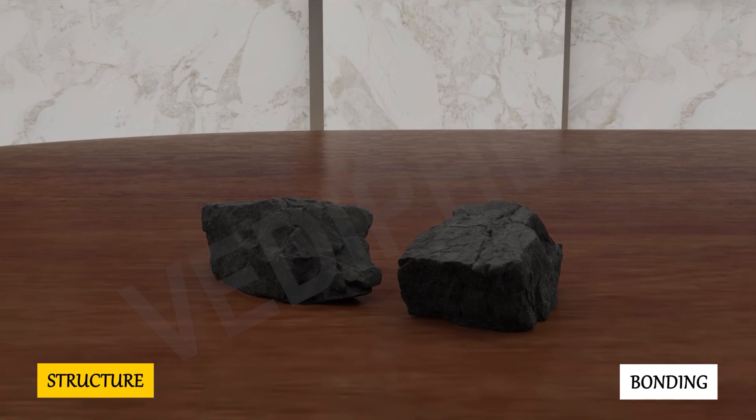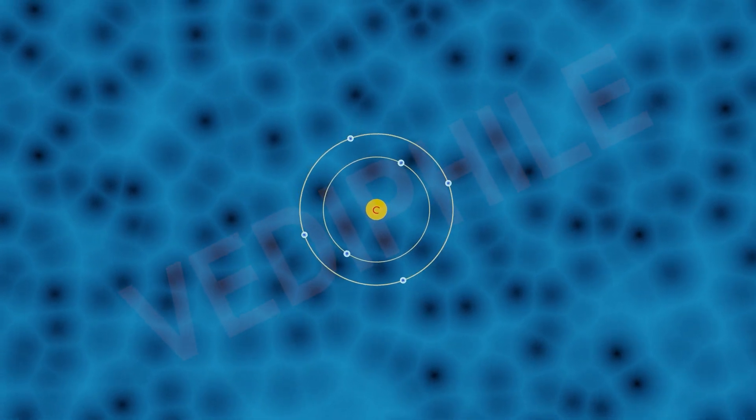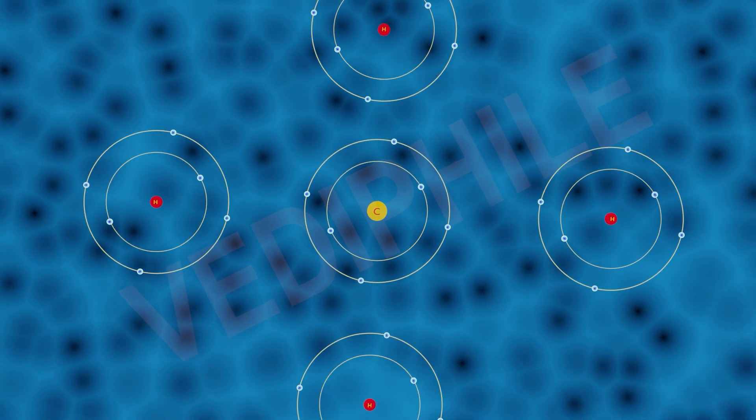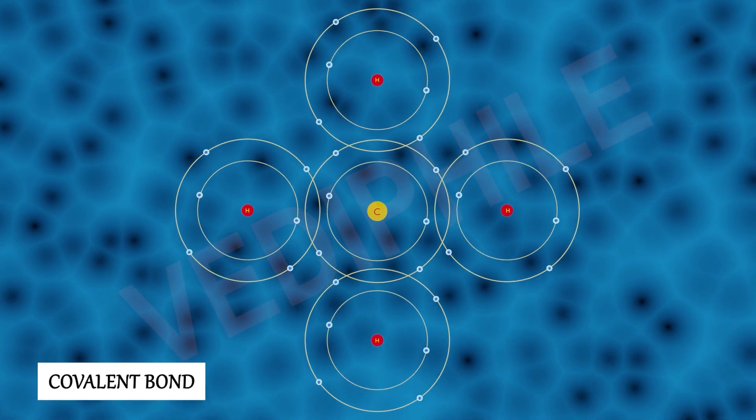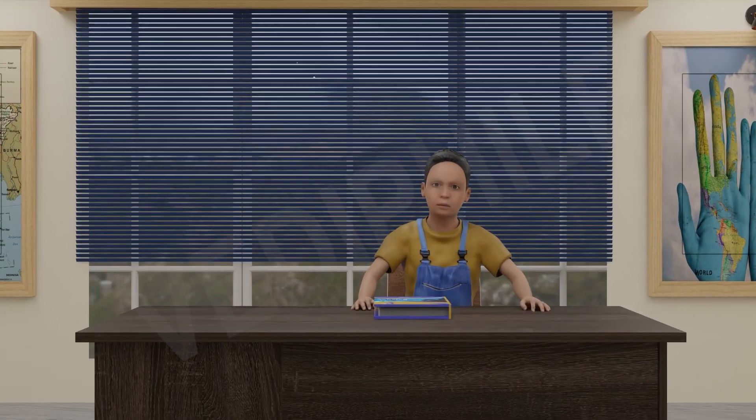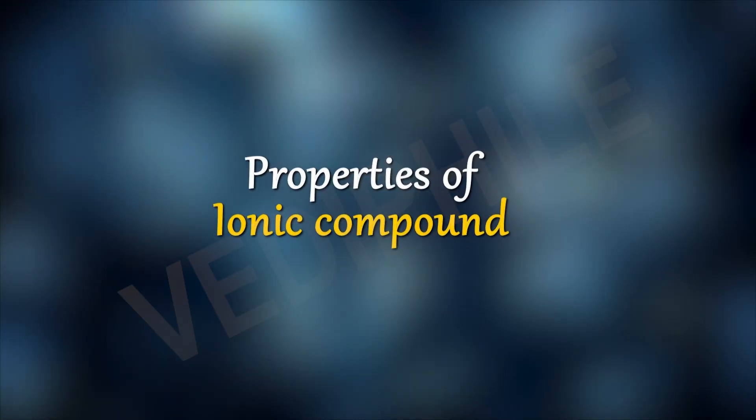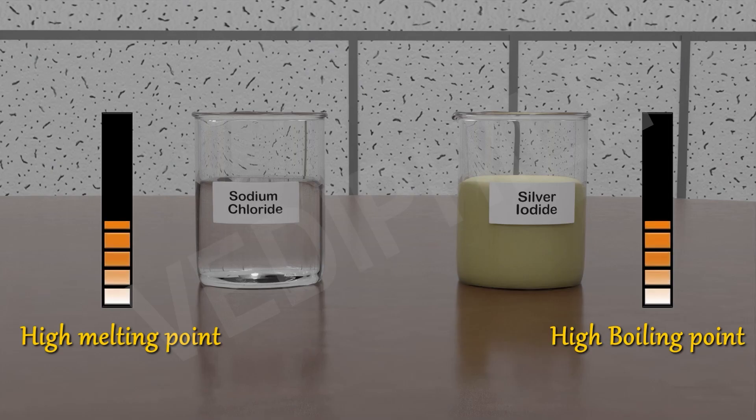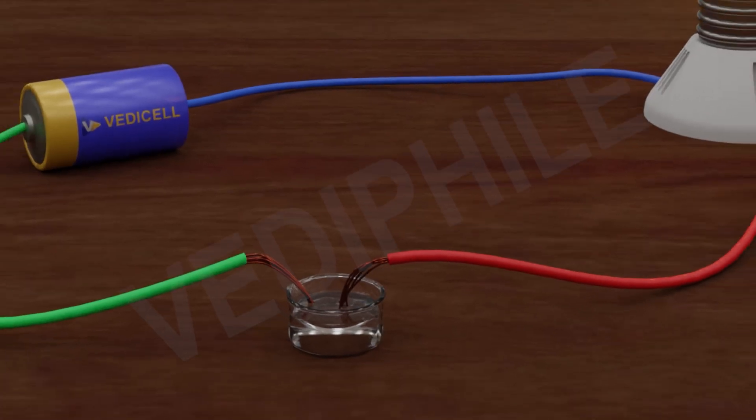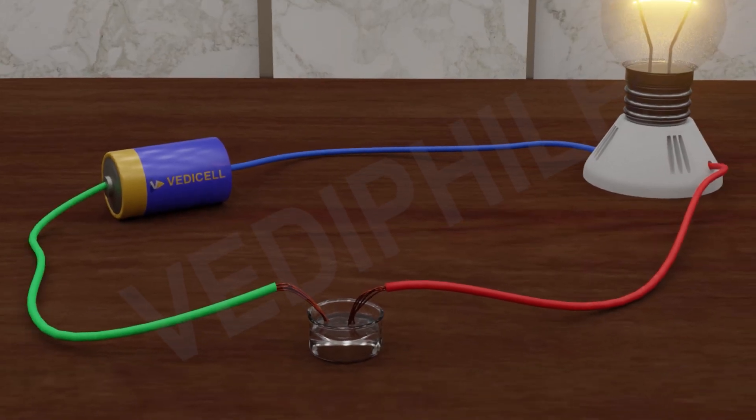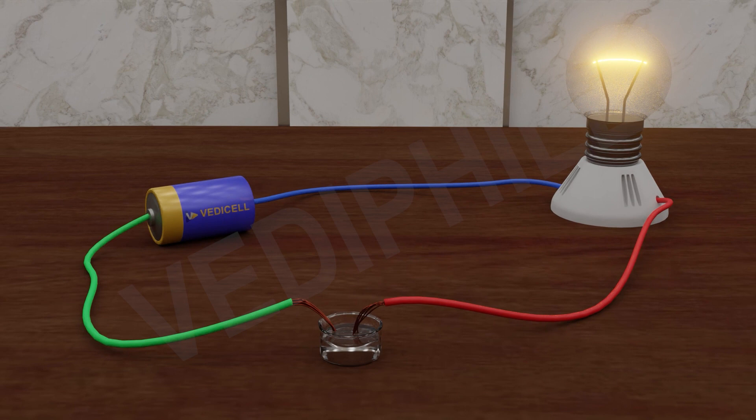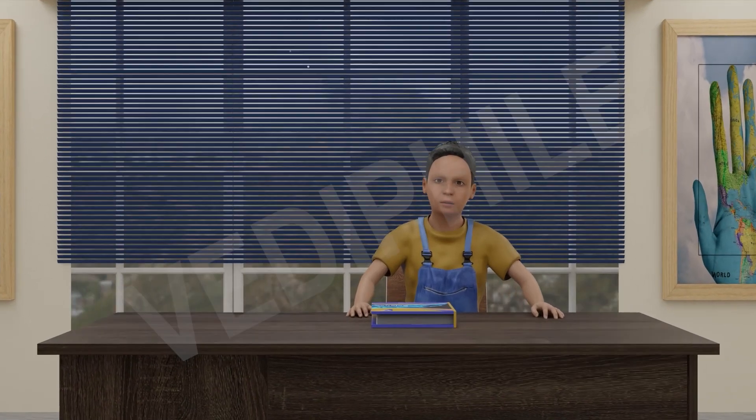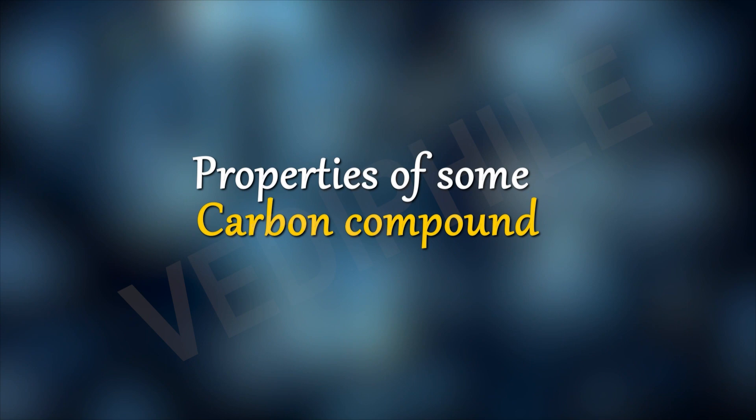Bonding in carbon - the covalent bond. We have already studied about the properties of ionic compounds. Ionic compounds have high melting and boiling points and conduct electricity in solution or in the molten state. Now let's study the properties of some carbon compounds.